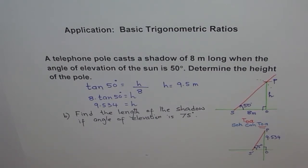Since we need to find this line and we know the height, we can use tan again. Tan of 75 degrees equals height, which is 9.534, divided by S. So S equals 9.534 divided by tan of 75 degrees. Use a calculator to calculate it.